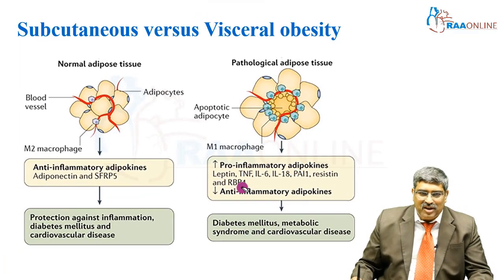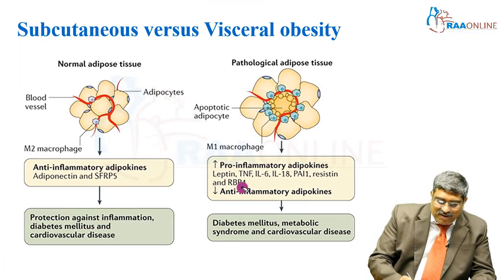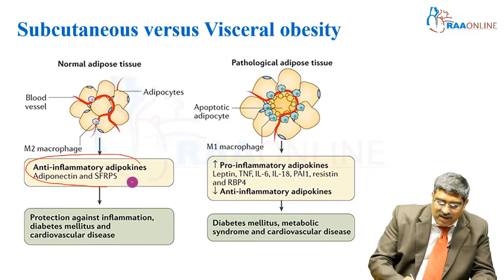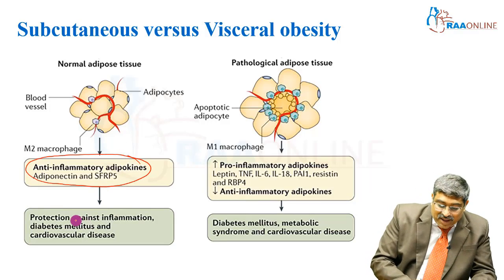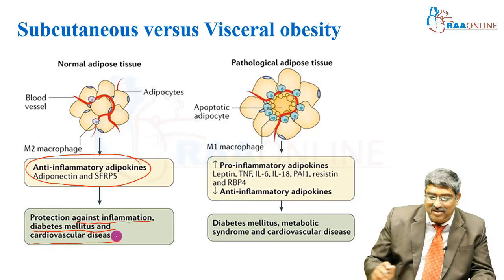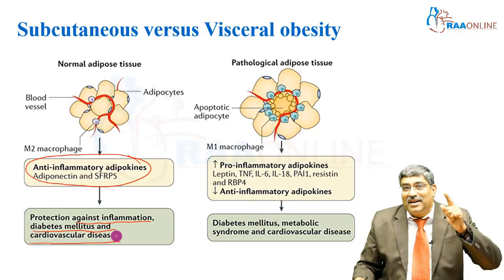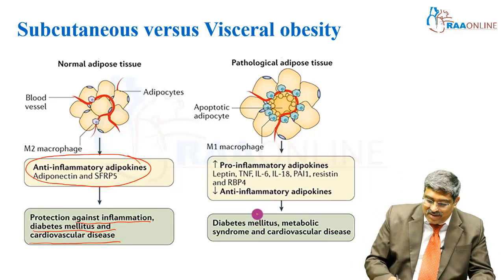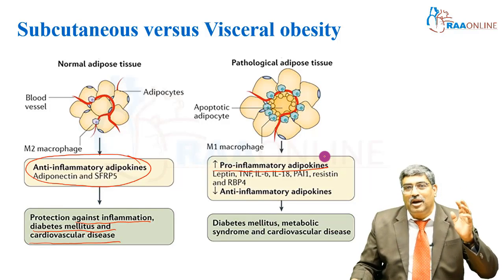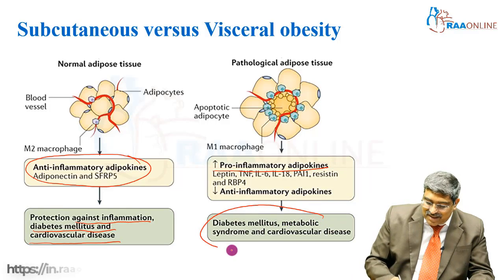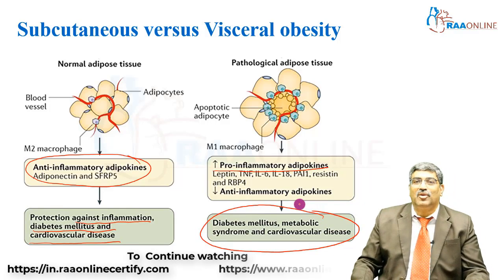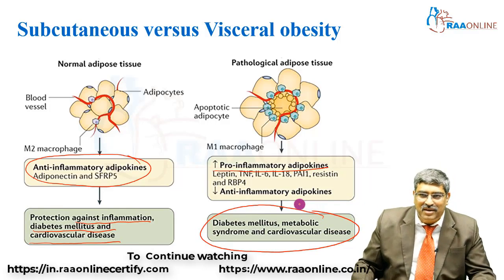In subcutaneous obesity, there are anti-inflammatory adipokines, which provide protection against inflammation, diabetes mellitus, and cardiovascular disease. But in visceral obesity, there are increased pro-inflammatory adipokines, leading to increased diabetes mellitus, metabolic syndrome, and cardiovascular disease.